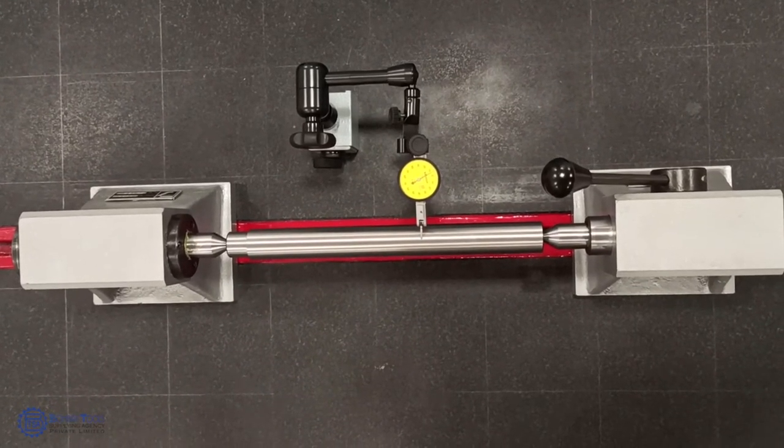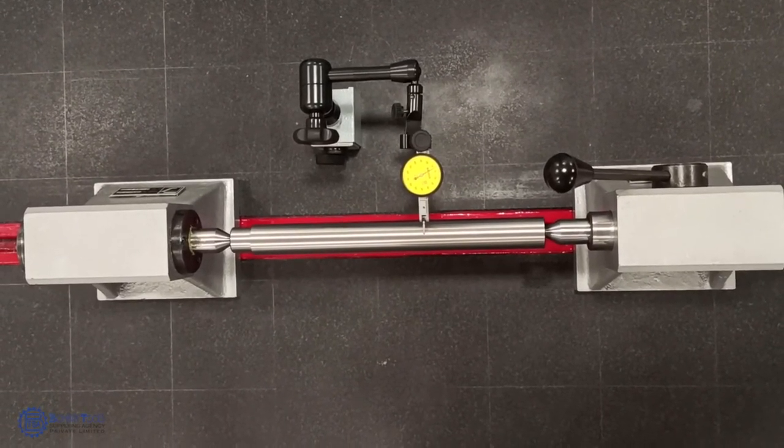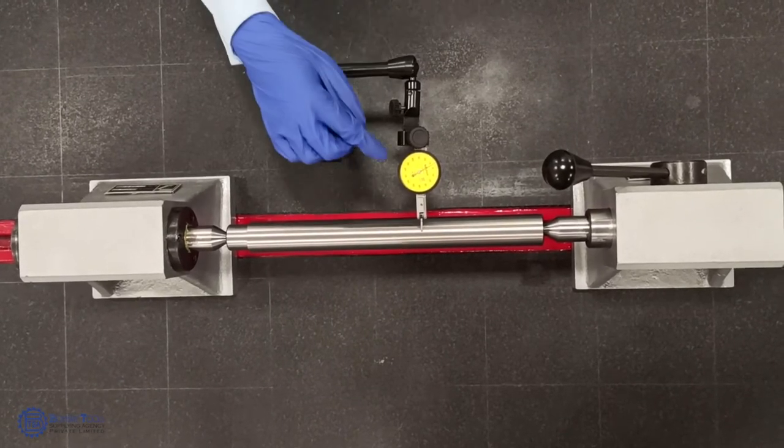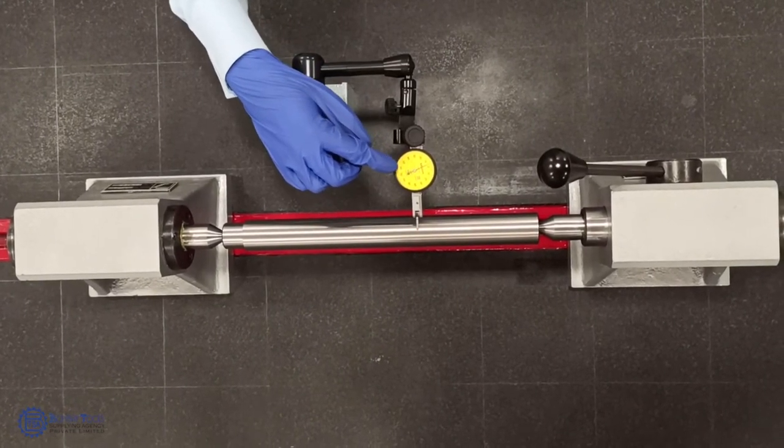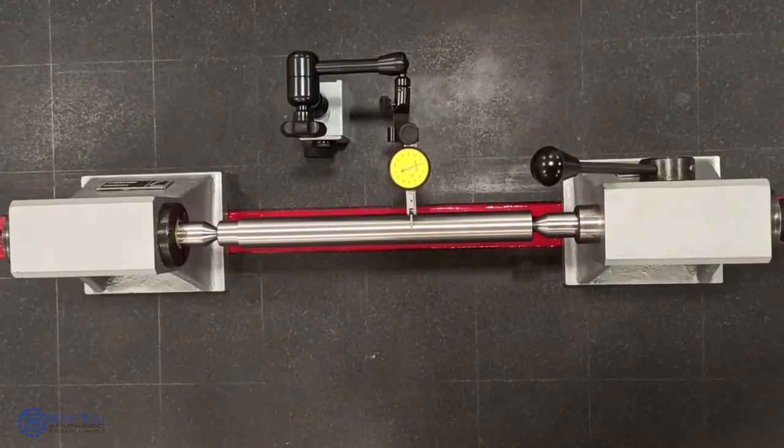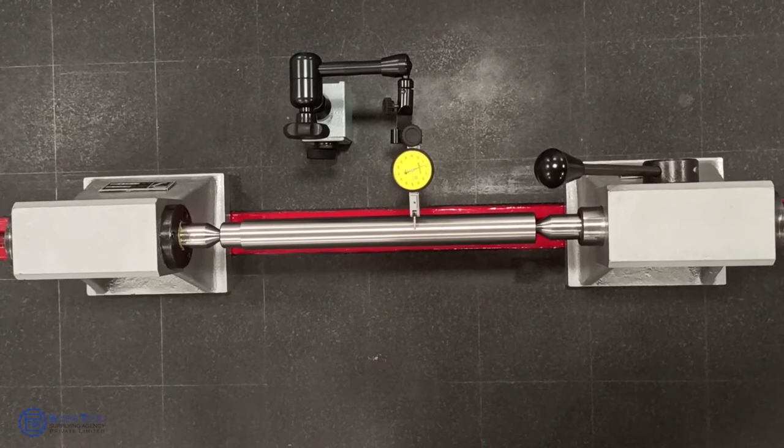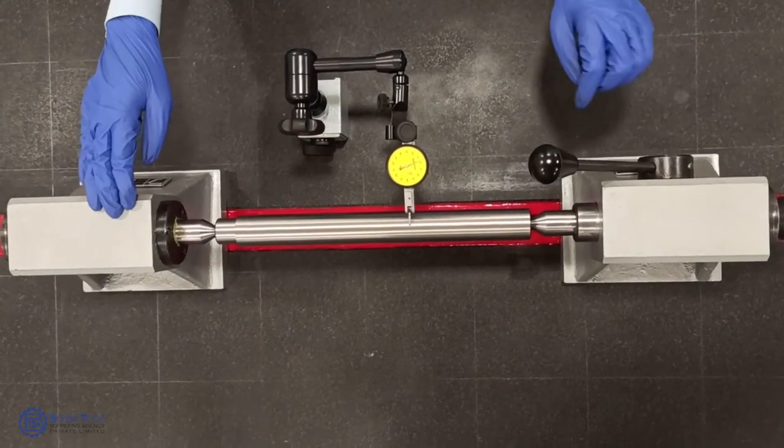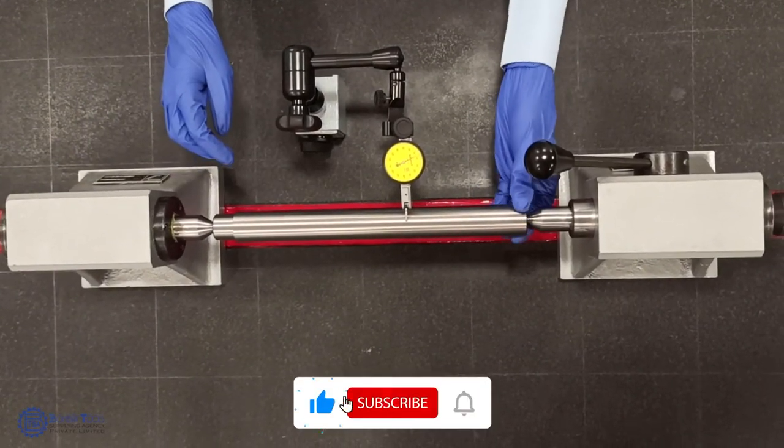Tolerances of run out is usually very small and hence it has to be checked with a high resolution lever dial gauge. Now I have fixed a 1 micron lever dial gauge, which means every graduation line reads 1 micron each. The setup of checking run out requires the use of bench centers so that the workpiece can be rotated on its axis.